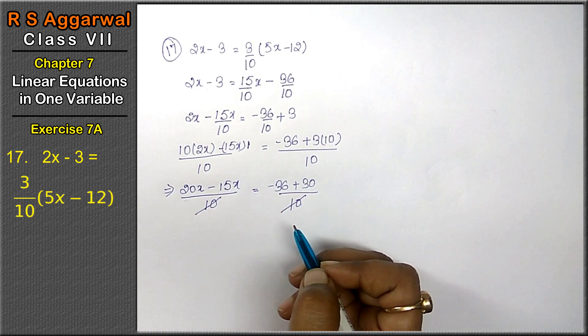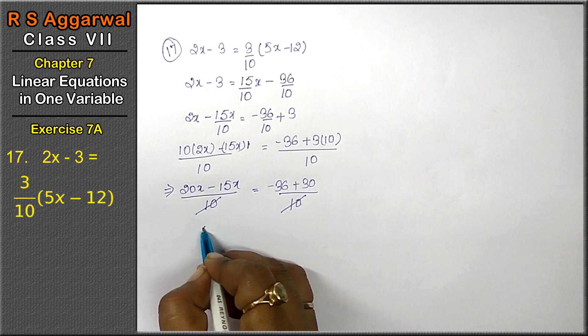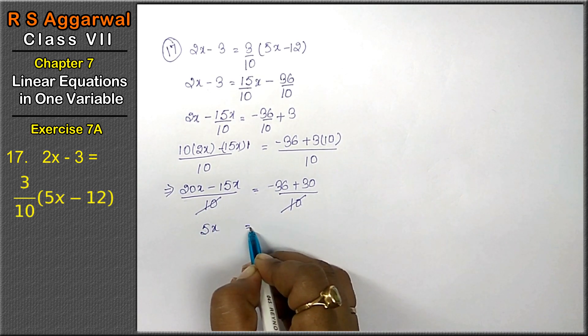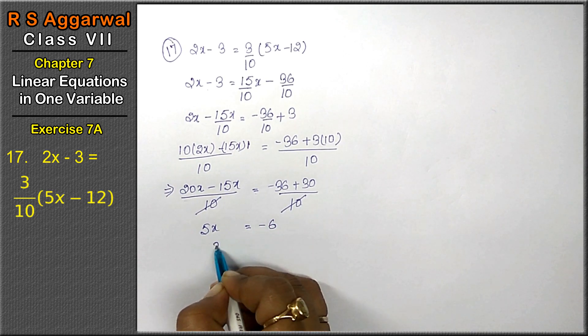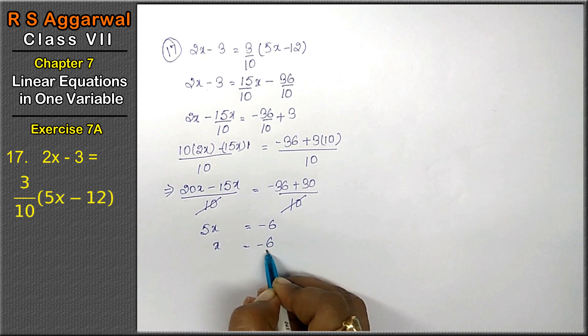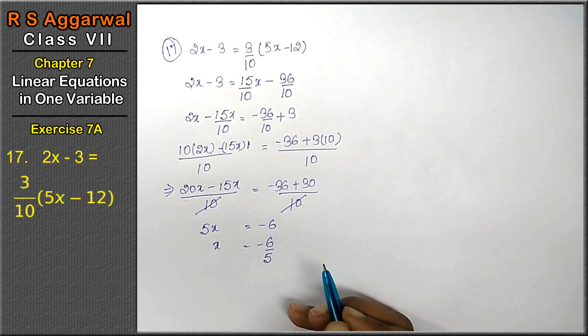Right friends. Now, 20x minus 15x is 5x equals to minus 6. x equals to minus 6 upon 5 is the answer. Let's check.